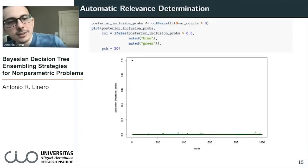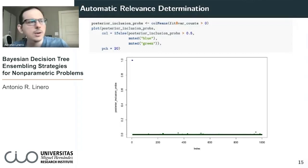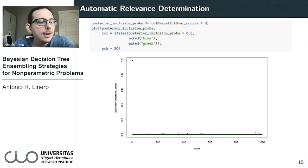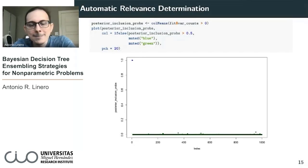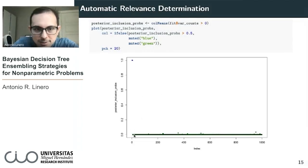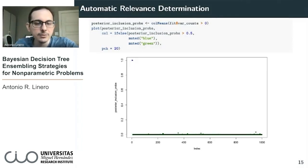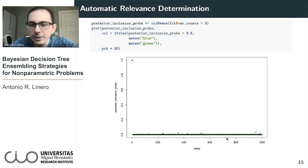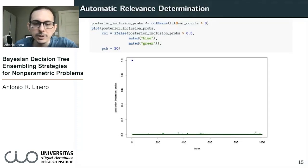One thing you can get out of it is posterior inclusion probabilities for each variable. In this case, there were 995 irrelevant variables. You get the posterior inclusion probabilities, and the model correctly picked out the five relevant ones — variables one through five. Those are the only relevant ones and it includes them in the model basically with probability one. All the other variables have been eliminated, meaning they're not used in the ensemble. So we can clearly identify which variables are relevant and which are not.